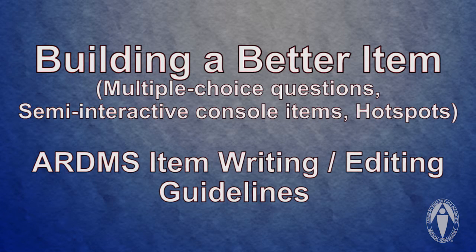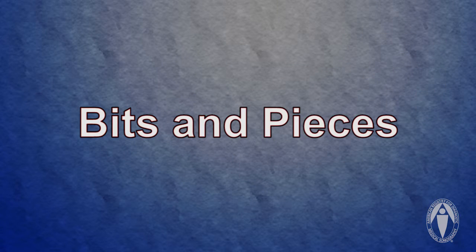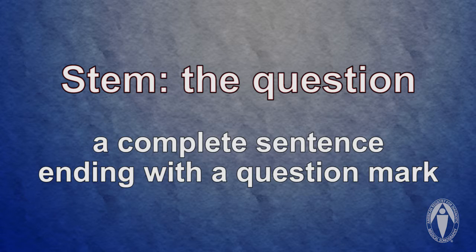Let's first talk about the bits and pieces of the item so we get the words down. The first thing is what we call the stem. In a multiple choice question, that is a question — it has a question mark at the end of a complete sentence. It's not an incomplete sentence, not a fill-in-the-blank or anything like that. Think of the stem as the stimulus — the thing that the candidate is reading that asks the question for them to respond to.